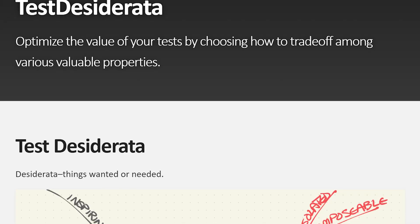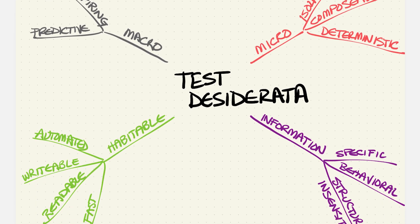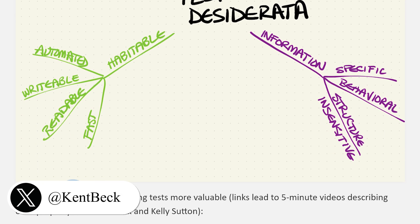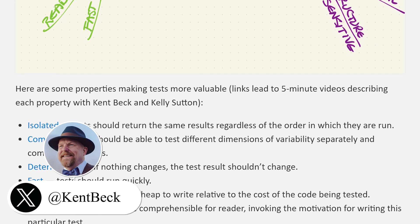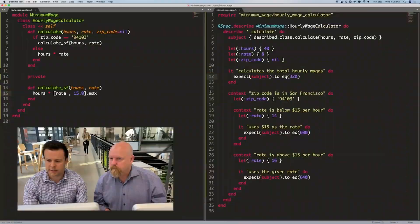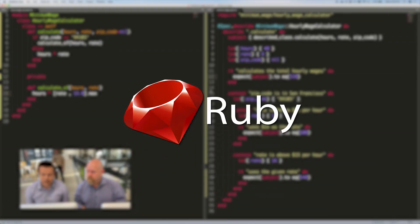If you Google evergreen testing principles, you might come across the article 'Testing Desiderata' by Kent Beck. There's also a video series by him and Kelly Sutton, but the problem is all of the examples in their video series are in Ruby.